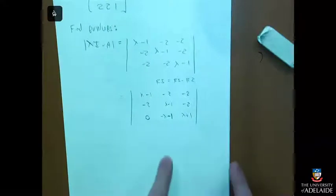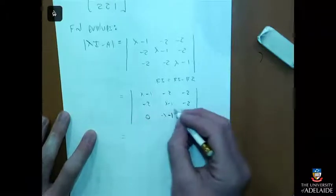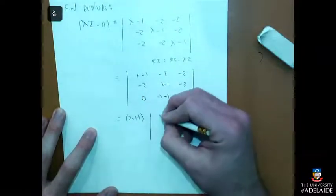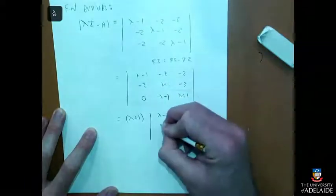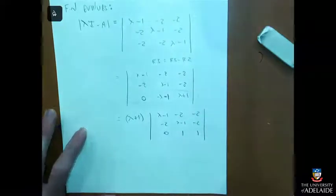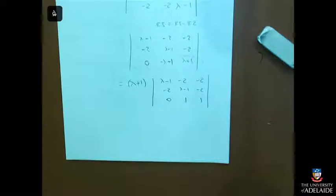I noticed that this is a minus lambda minus one, which is minus of lambda plus one. Both of these rows have a lambda plus one factor, so I can factor that out of that row. Part of my characteristic polynomial has already been factored — I've got a lambda plus one times other stuff. So one of the eigenvalues is minus one.